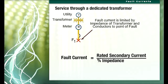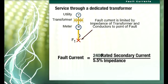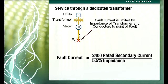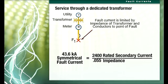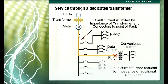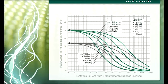For a 2000 KVA, 5.5% impedance transformer, rated current is approximately 2400 amps. The fault current at the transformer terminals would therefore be 2400 divided by 0.055, equals 43.6 kilo amps symmetrical. The fault current available at F2 is further reduced by the impedance of the additional conductors. The plot shown here illustrates the limiting effects of transformer and conductor impedance.